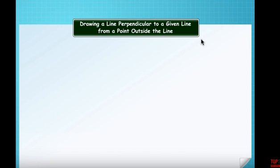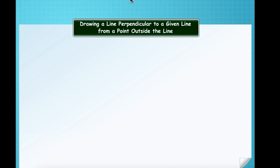In this video we will be studying how to construct a perpendicular to a given line in various ways — using a set square or using a compass, whether the point is outside the line or on the line. We will use various methods to construct the perpendicular. Let's start with drawing a line perpendicular to a given line from a point outside the line.